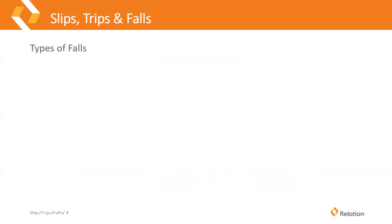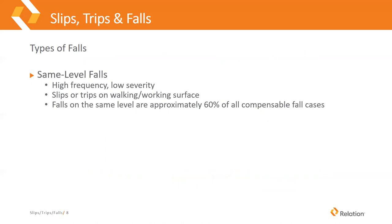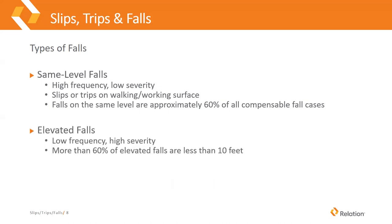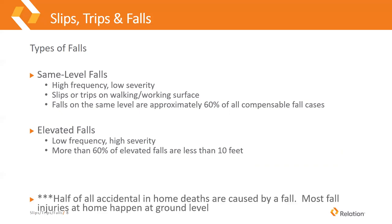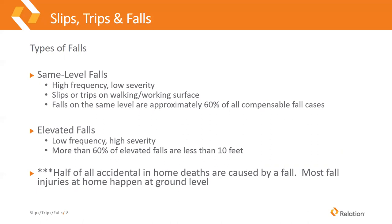There are two types of falls. Same-level falls are high frequency, low severity — it's when you slip or trip on a walking or working surface. Falls on the same level account for approximately 60% of all compensable fall cases. Elevated falls are low frequency, but when they happen the injuries are going to be more significant. More than 60% of elevated falls are from less than 10 feet, so it's not just high-rise construction workers — we're talking about step ladders and objects used as ladders that aren't supposed to be.